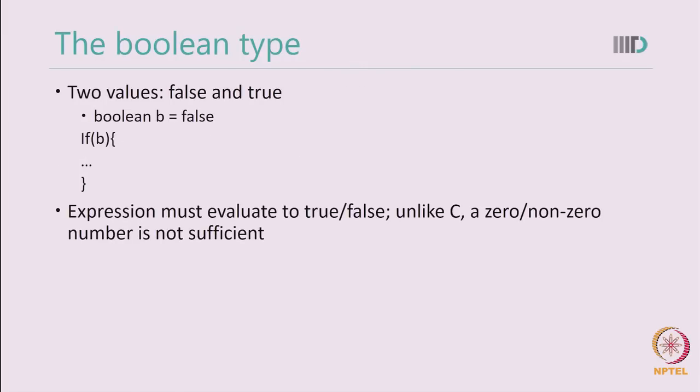Java Boolean has two values, false and true. In Java, an expression must evaluate to true or false. This is different than C or C++ where a 0 or non-zero value works.